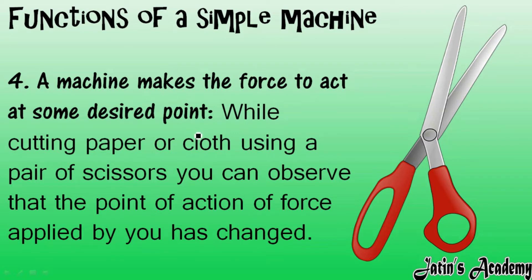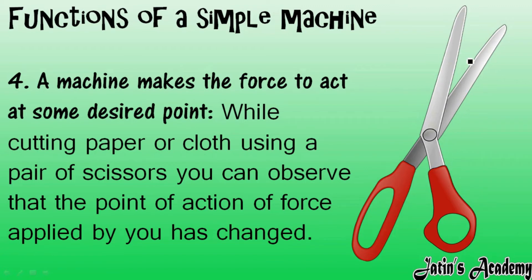The next function of a simple machine is that a machine makes force act at some desired point. For example, while cutting paper or cloth we use a pair of scissors. We apply force on the handles of the scissors, but the scissor applies force on the paper through its long arms. So with the help of a machine you can make the force act at a desired point away from where you are applying it.